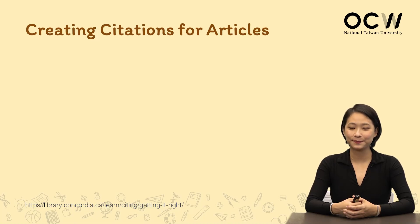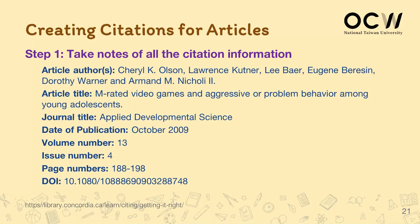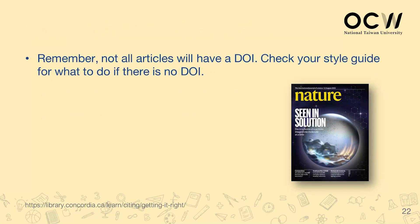When citing articles, the first step — which you're very familiar with now — is to gather all necessary information from the reference material. Remember, if there are electronic sources, you must include the DOI. Sometimes you must also include the date that you accessed the information. If there are particular journals or periodicals, ensure to include their volume number or issue number as well. Also keep in mind that not all articles will have a DOI, so check your style guide to see what to do if a DOI is not present.